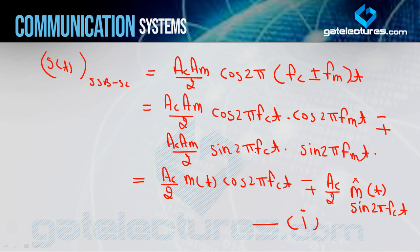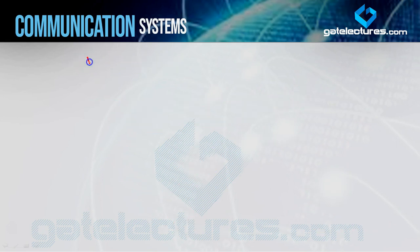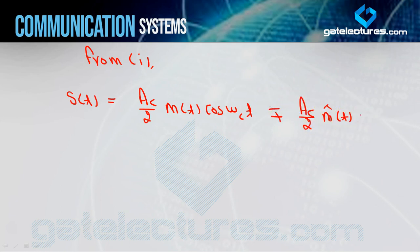Ab back to SSB-SC analysis. From equation 1, SSB-SC ka equation hai: s(t) = Ac/2 · m(t) · cos(ωc·t) ∓ Ac/2 · m̂(t) · sin(ωc·t). Yahan minus sign upper sideband ke liye hai aur plus sign lower sideband ke liye hai. Pehle meine kaha tha plus upper ke liye aur minus lower ke liye — lekin woh tab tha jab cos(2π(fc±fm)t) tha. Jab cos(a±b) formula apply kiya, toh signs reverse ho jaate hain.